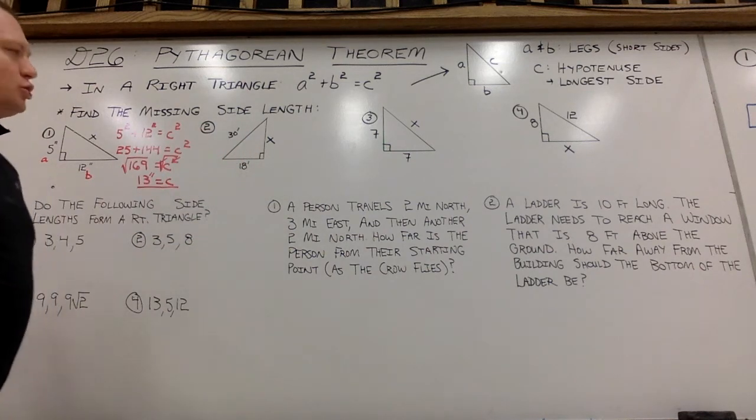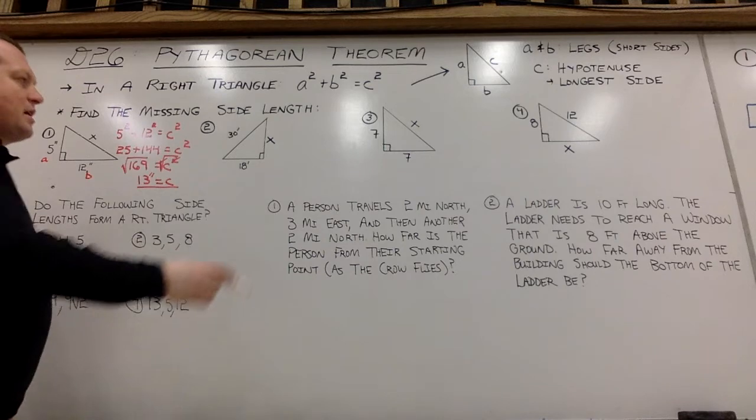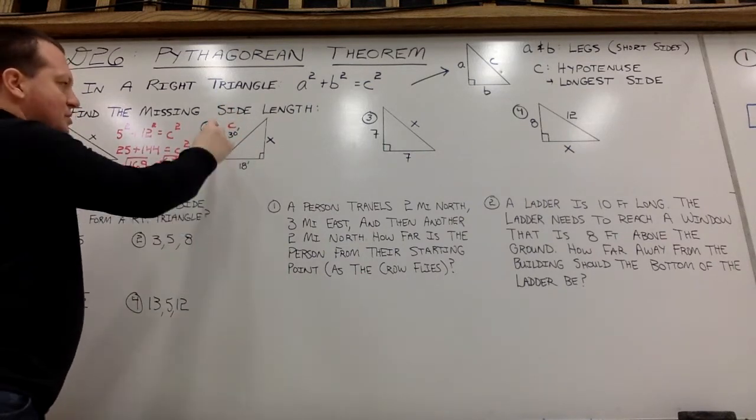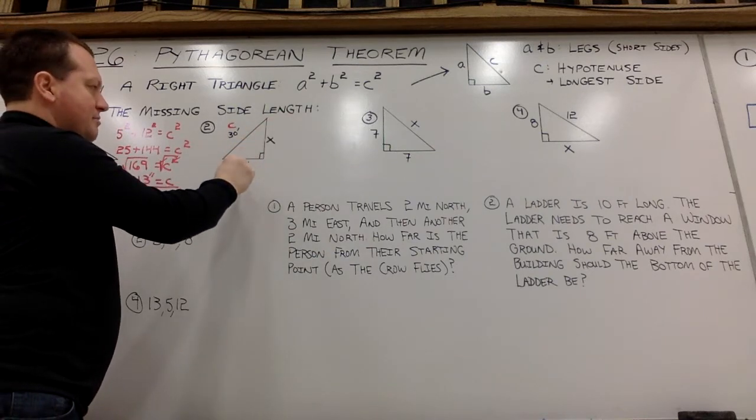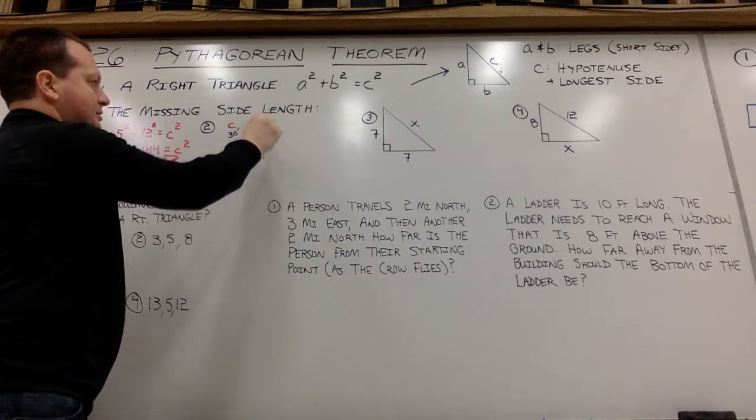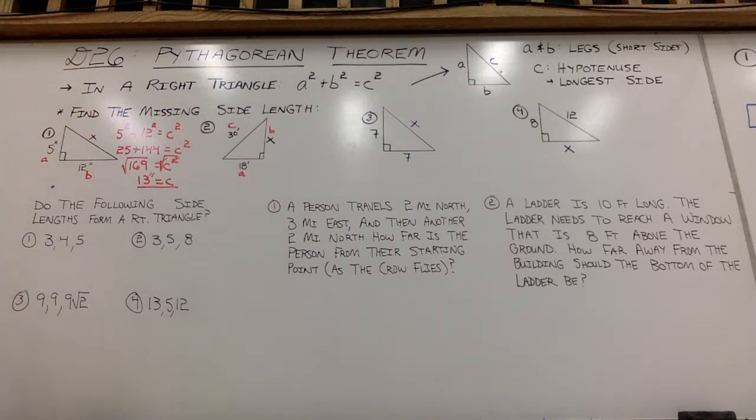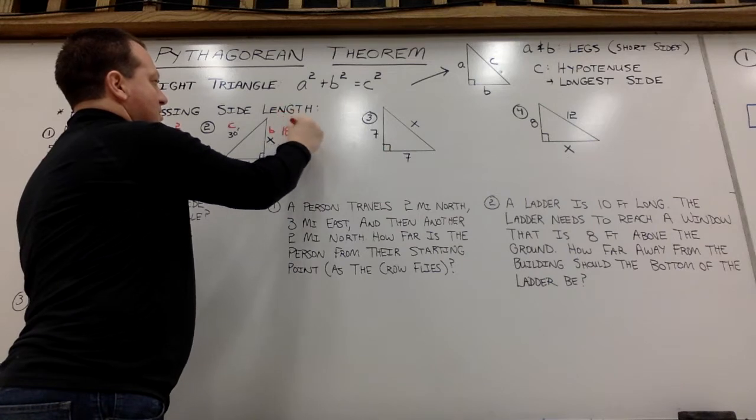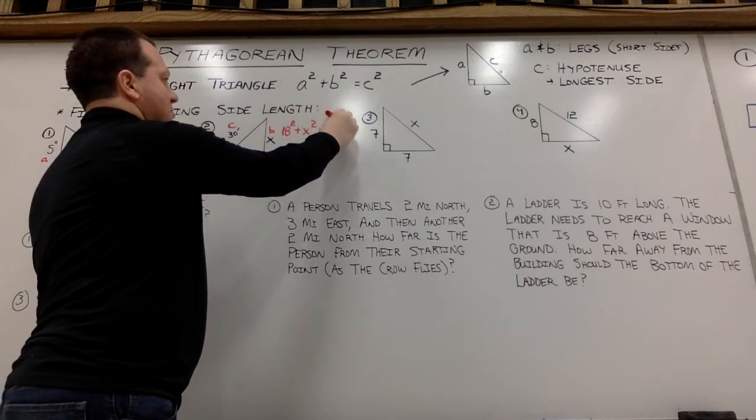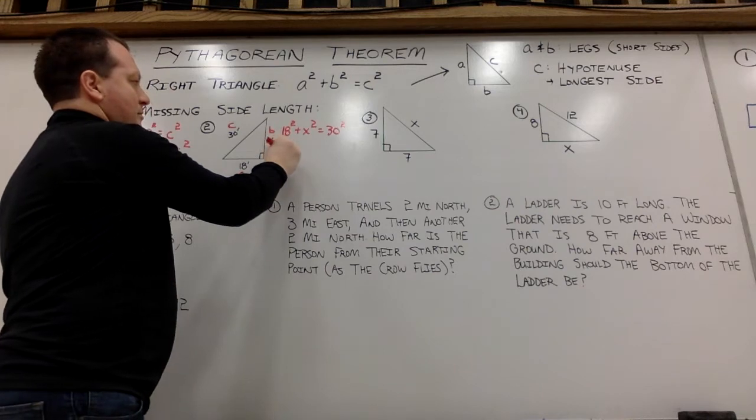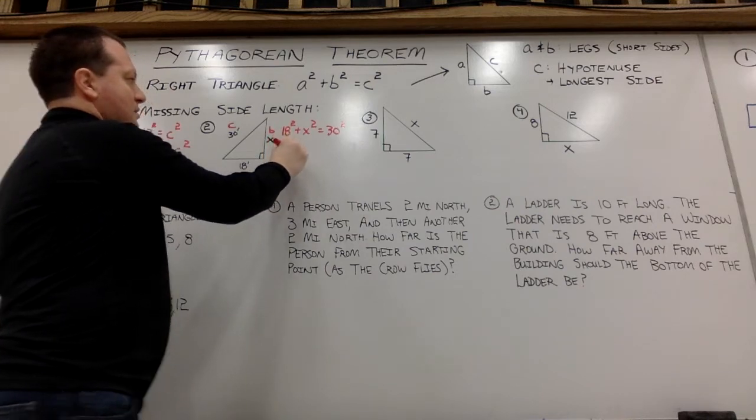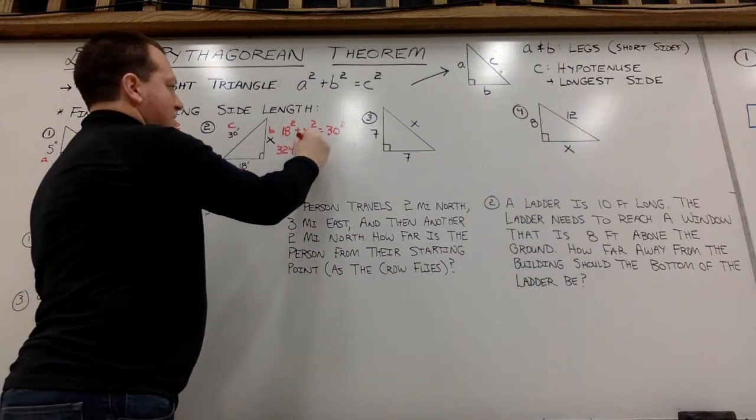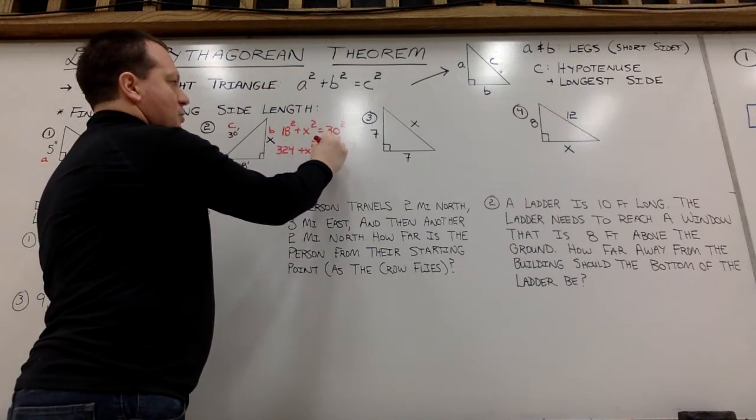Let's take a look at example two. Here I have a right triangle. Notice that my hypotenuse I'm given in this case is 30. 18 could be a or b. I'll just call it a. And then x will be my b value. So I'll say 18 squared plus x squared will equal 30 squared. So 18 squared is 324 plus x squared will equal 30 squared, 900.